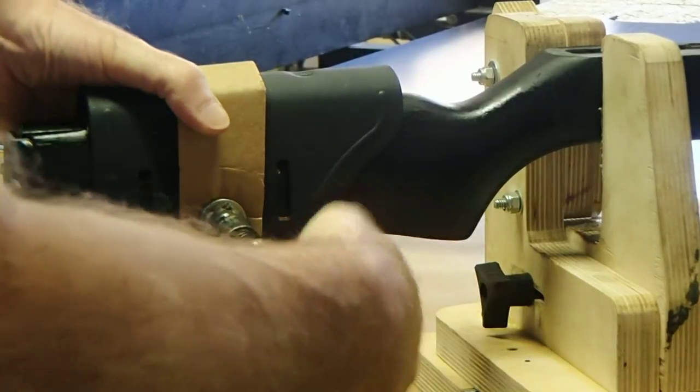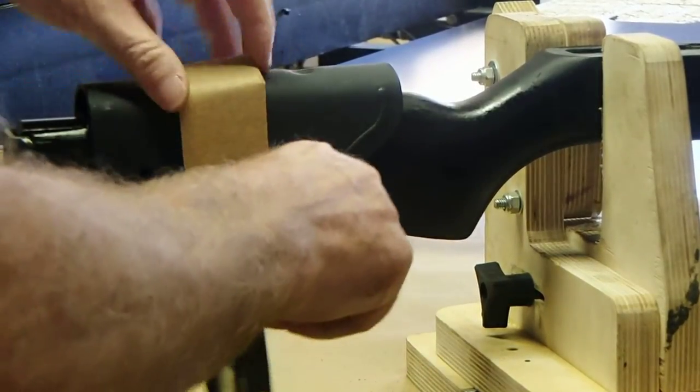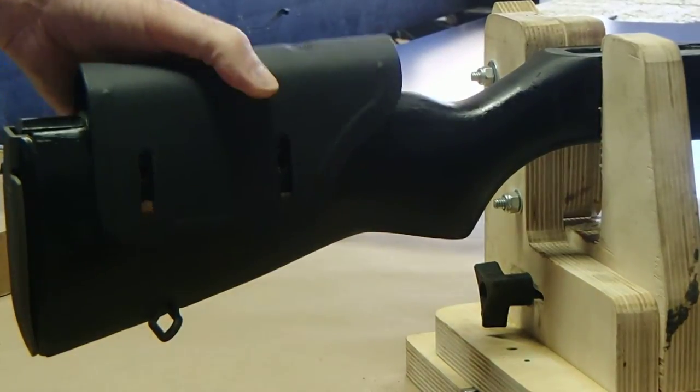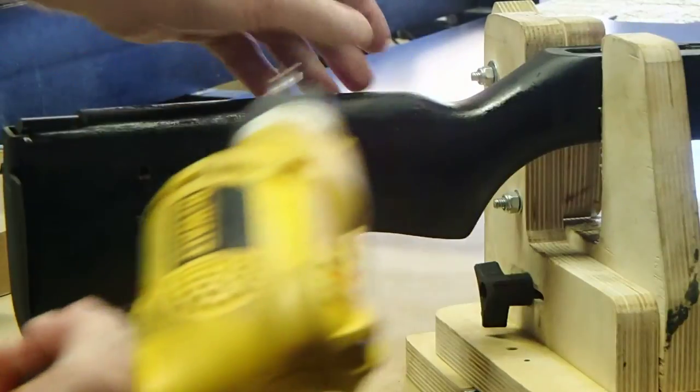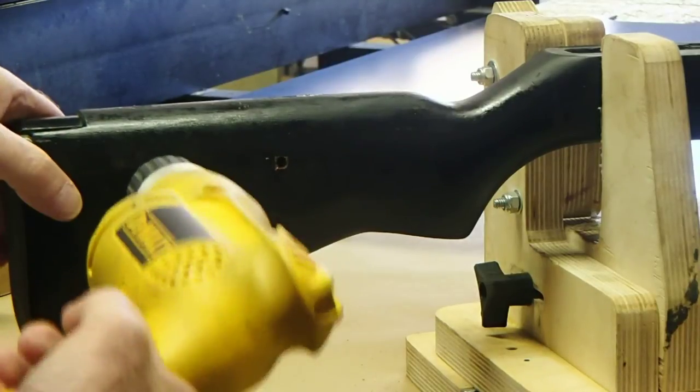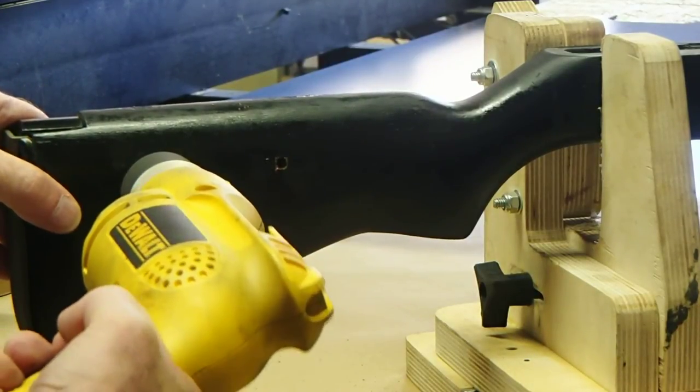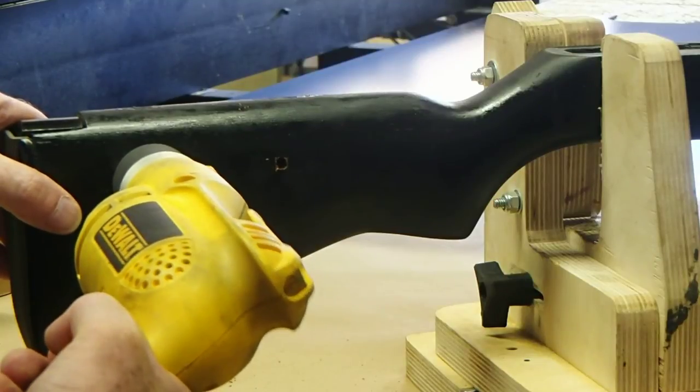Once you've done that, remove the cheek-rest from the stock. Then drill right through, connecting the holes from one side to the other. Go slowly so the drill bit can match up with the hole on the other side.